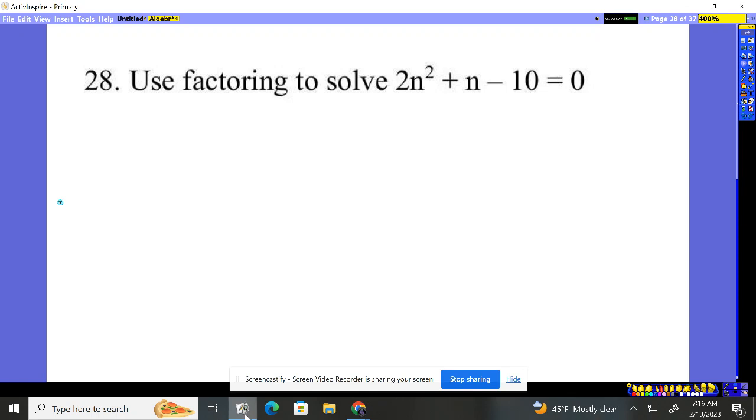Use factoring to solve this. I need to factor 2n² + n - 10. Once I factor it, it'll break down to this times this equals zero, and then I'll set each piece equal to zero.